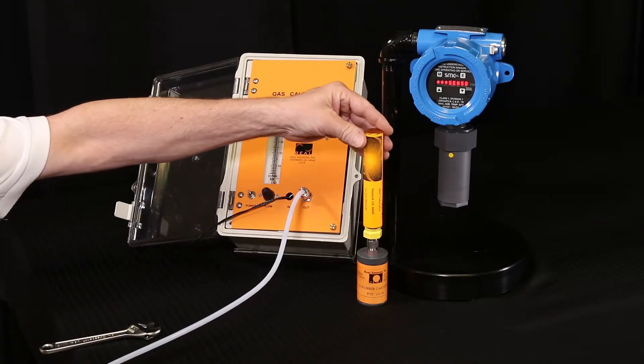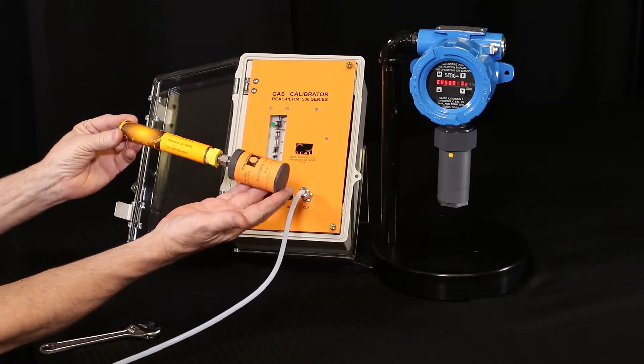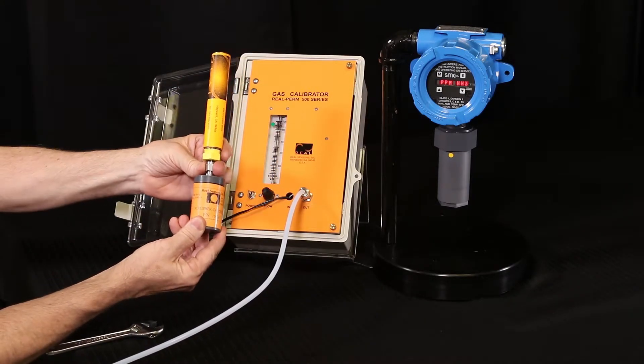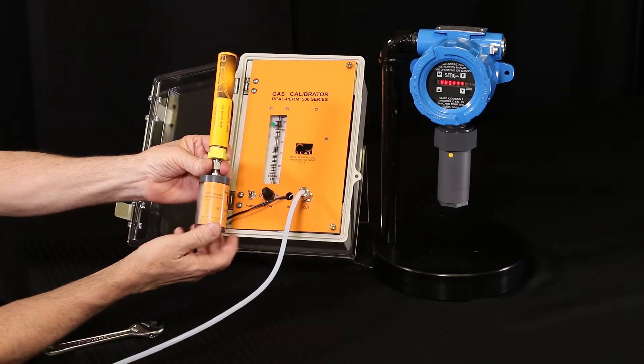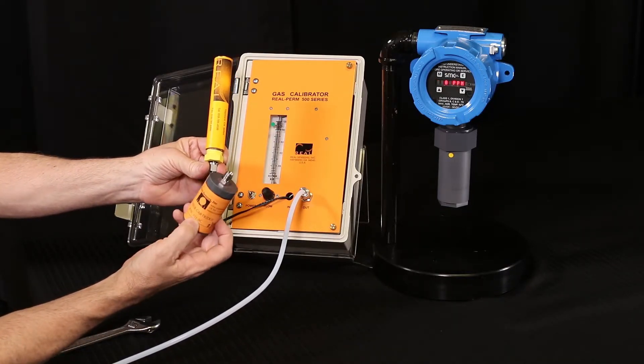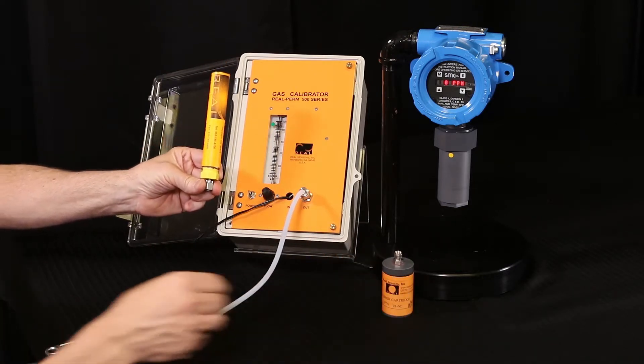Please verify that the permeation tube is not expired. If expired, replace immediately. The permeation tube is shipped with a scrubber cap that must be replaced when the tube is not in use. The tube must also be removed from the calibrator when not in use to prevent contamination of internal components.